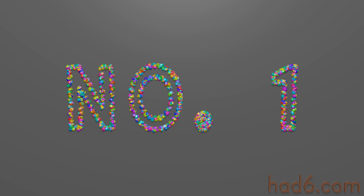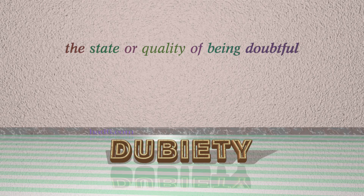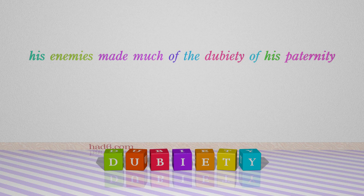Number 1: Jubiety. Which means the state or quality of being doubtful. For example: His enemies made much of the jubiety of his paternity.